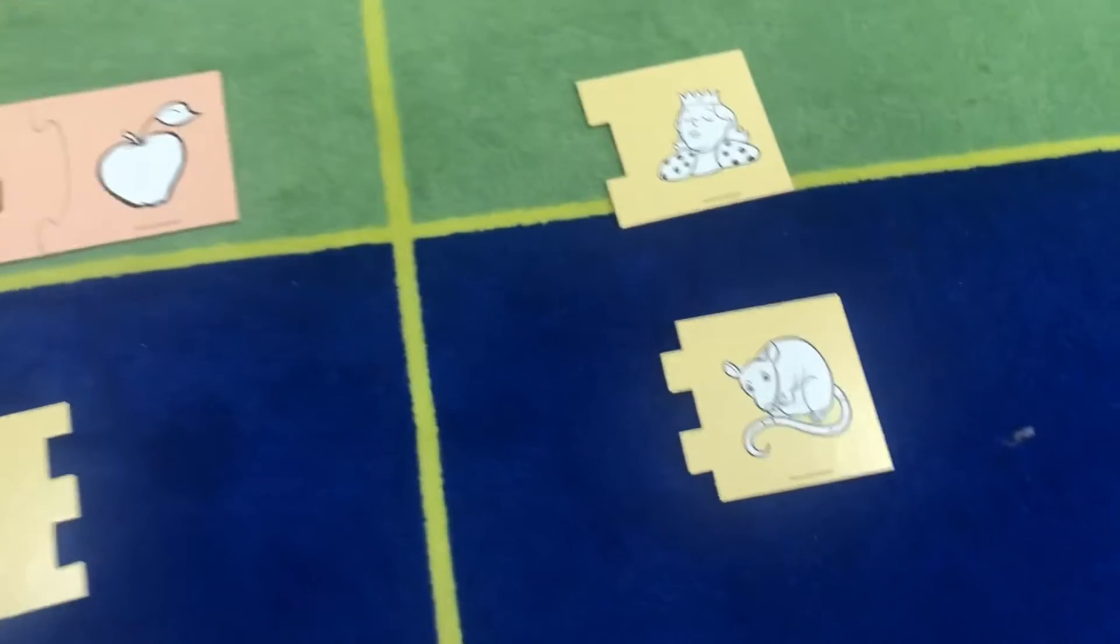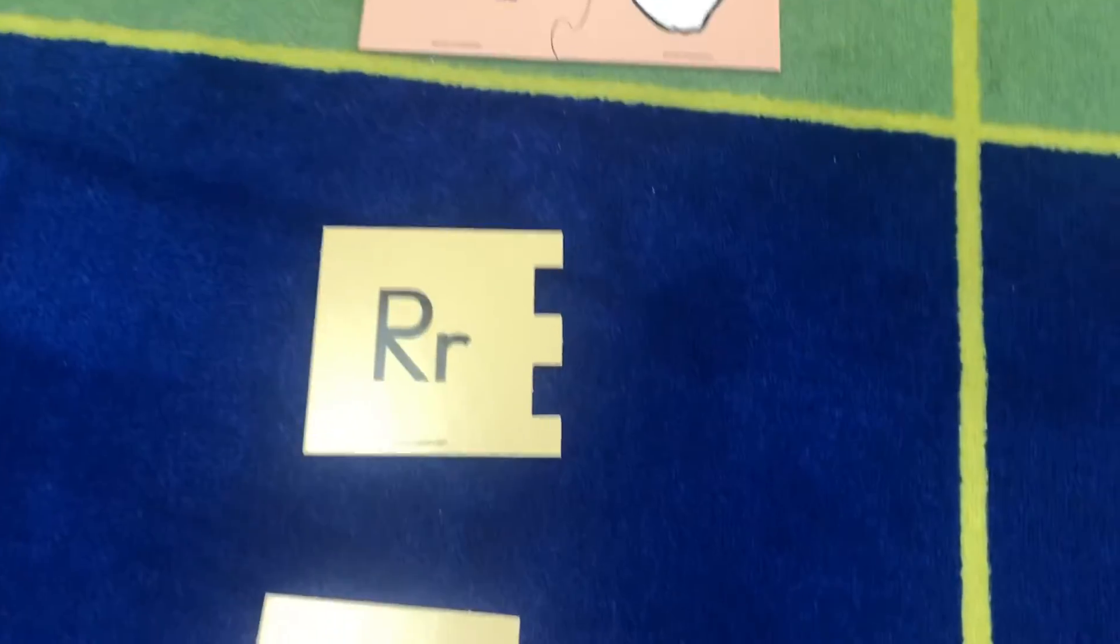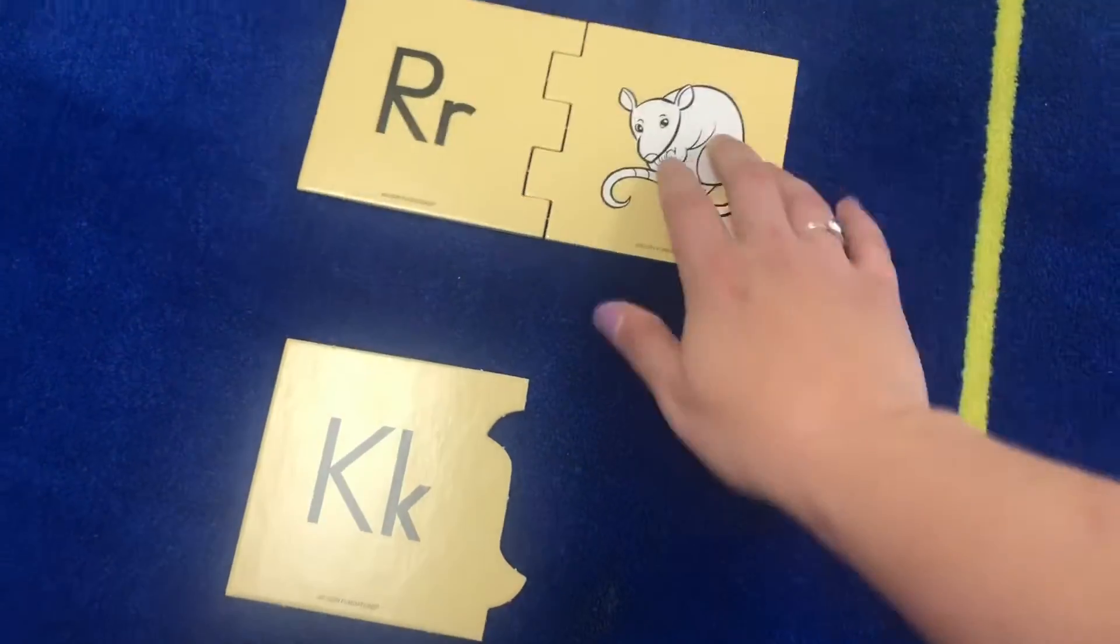For example, the apple would match with A, so you would bring the apple over and match it with A. And then you can also do the rat. Rat starts with R. R, rat. So you match the rat with R.